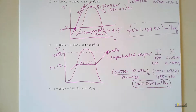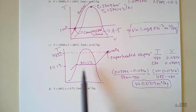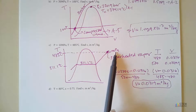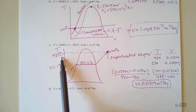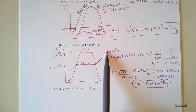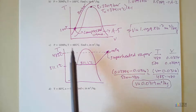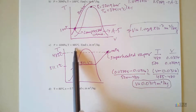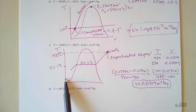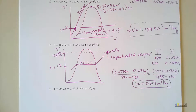We started with the liquid-vapor table, figured out what temperature corresponded to this pressure, noticed our temperature was much higher, found the intersection, and that told us which table to use. If our temperature had been 100°C instead of 485°C, we would have been in the compressed liquid region. That's how you use the tables to determine whether you have compressed liquid, liquid-vapor mixture, or superheated vapor.